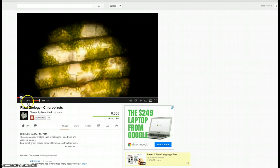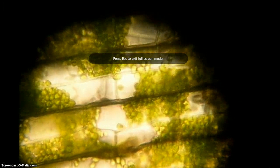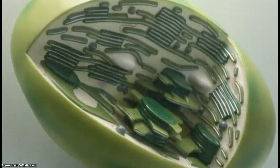And we'll want to talk about chloroplasts as the narrator discusses them. The green color of algae and of cabbages, pine trees and grasses all comes from small green bodies called chloroplasts within their cells. Chloroplasts are distant descendants of once free-living green bacteria. They still have their own DNA and they still reproduce by asexual division.